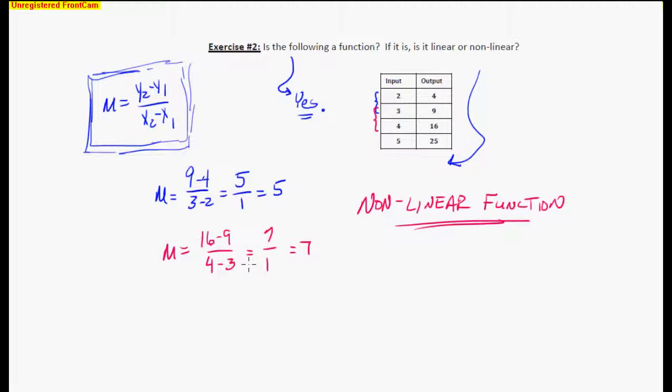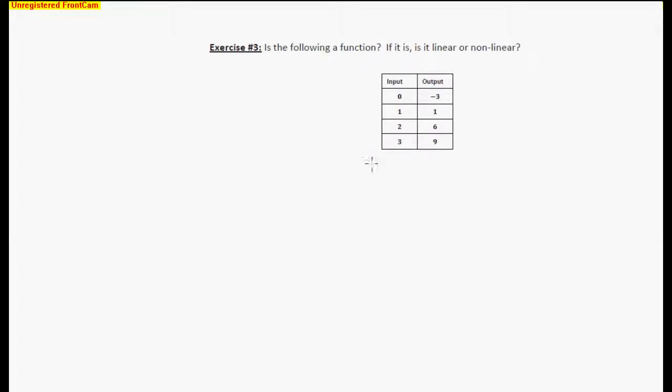Let's turn off this one and turn on number 3. Is the following a function? Well, 0 maps to negative 3, 1 maps to 1, 2 maps to 6, 3 maps to 9. So yes, it is a function. And let's figure out the slopes. Again, I'll write my slope equation right here. That's the equation I'm going to use, and I'm going to find the slope in between these two points.